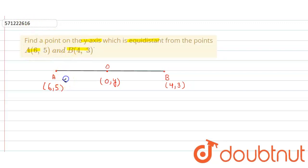As you can see in the figure, the point A is taken as (6, 5) and B is (4, 3).